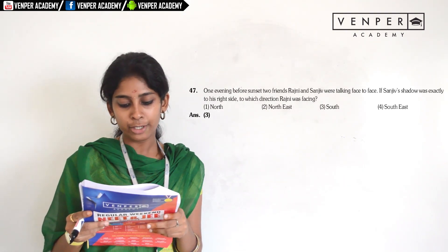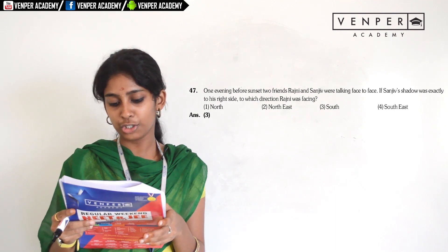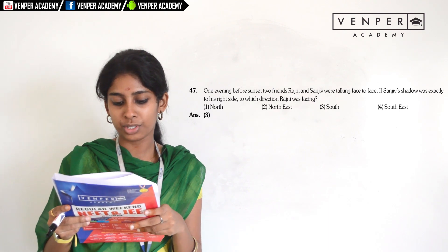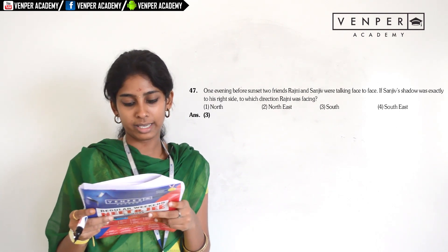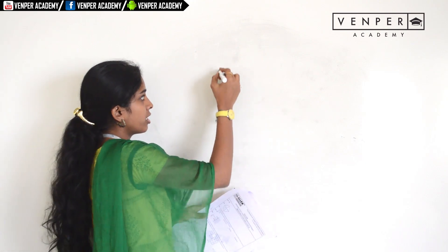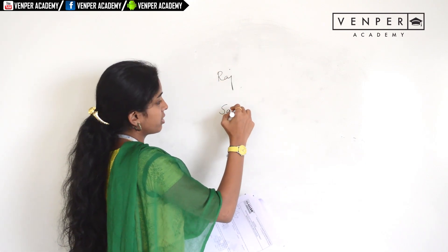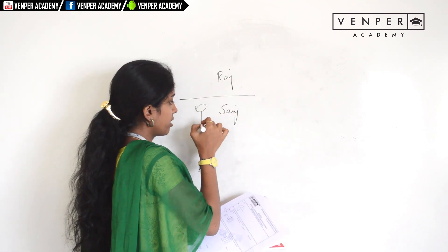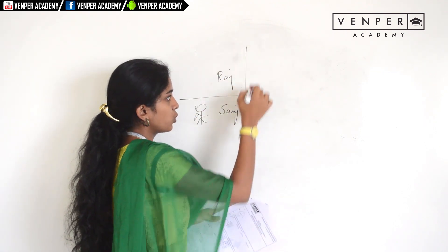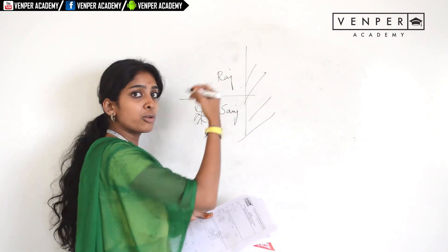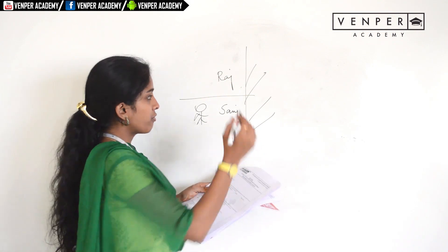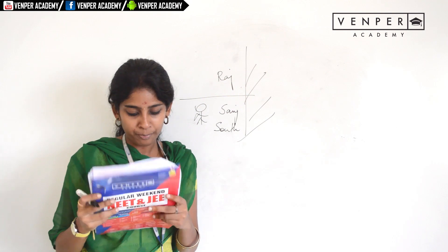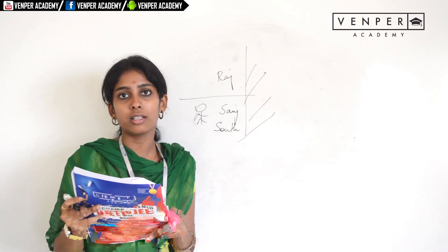Question forty-seven: one evening before sunset, two friends Ranjini and Sanjee were talking face to face. If Sanjee's shadow was exactly to his right, they are facing each other. With the shadow to the right, Ranjini was facing the south direction. So the answer is the third option — south.